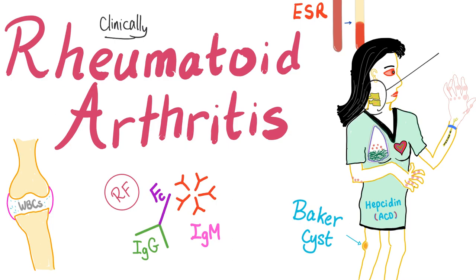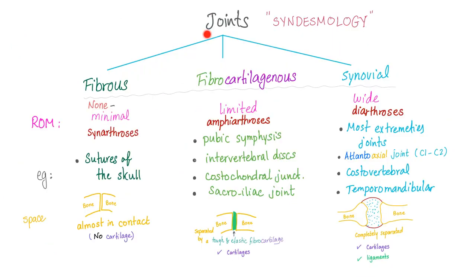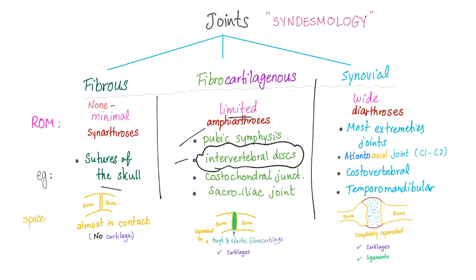Also known as cervical spine subluxation. Joints are divided into fibrous, fibrocartilaginous, and synovial. Fibrous — no movement; example, sutures of the scalp. Fibrocartilaginous — limited movement, such as the symphysis pubis, intervertebral discs (important for today's lecture), and the costochondral and sacroiliac joint, also important for today's lecture.